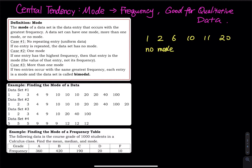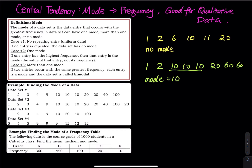The next example has one mode. For instance: 1, 2, 10, 10, 10, 20, 60. Which data has the highest frequency? It's 10 — 10 occurs three times. So the mode is 10.